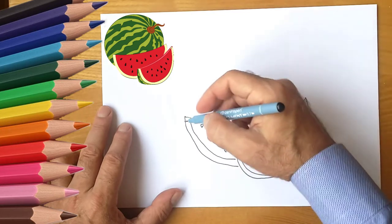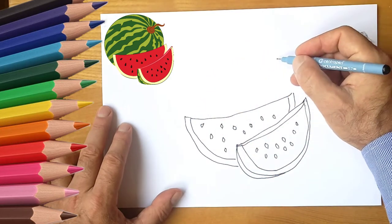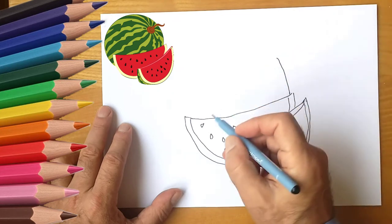She is standing next to the first slice. And now let's draw a circle. It will be a whole watermelon.